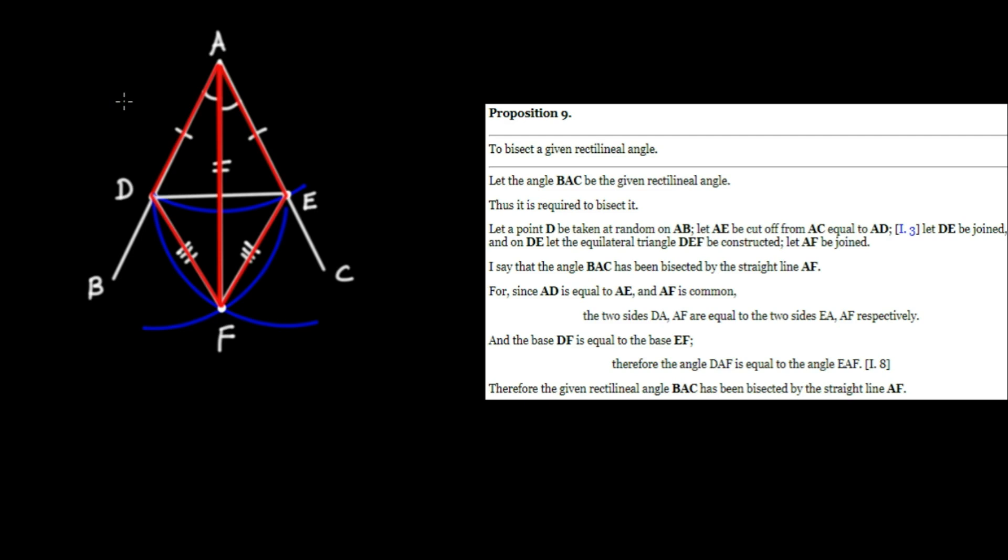And hence, we conclude that these two triangles are equal. And therefore, we conclude that their respective angles are going to be equal. Notice that these two angles are both opposite to the triple dash side, DF and FE. These two angles are equal.